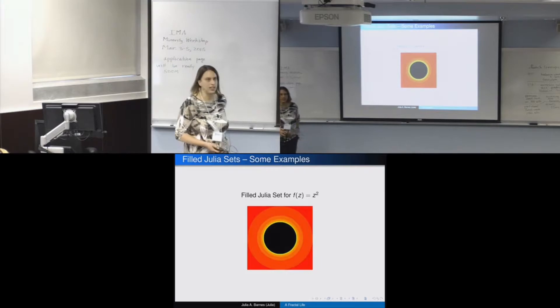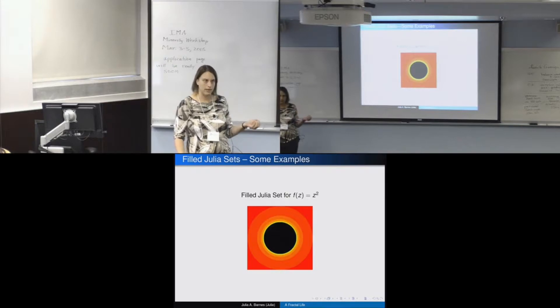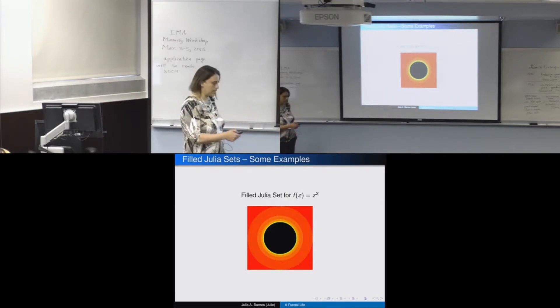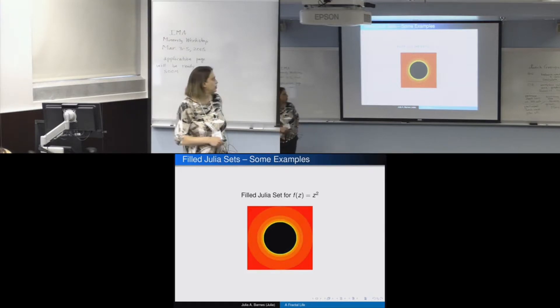And then the Julia set would be the boundary of the filled Julia set. So, for example, if I look at Z squared, if you take anything inside the unit circle, the radius is less than one, and when you start iterating, it'll get smaller and shrink towards zero, so it is bounded. If you take things that are outside, they have a radius greater than one, and will iterate away. So those are not in the filled Julia set. And points on the edge stay on the edge. The Julia set would actually be the edge. And that's about the most boring Julia set you can look at.